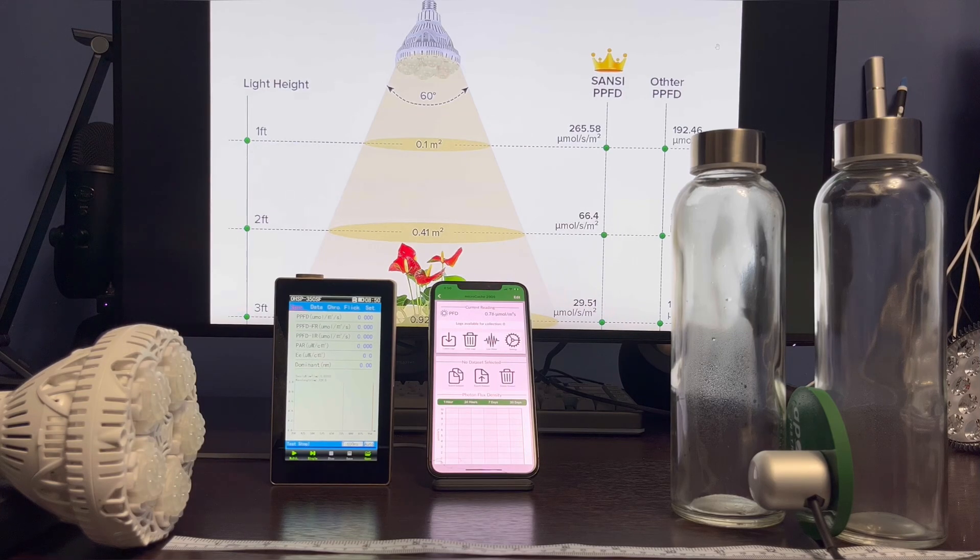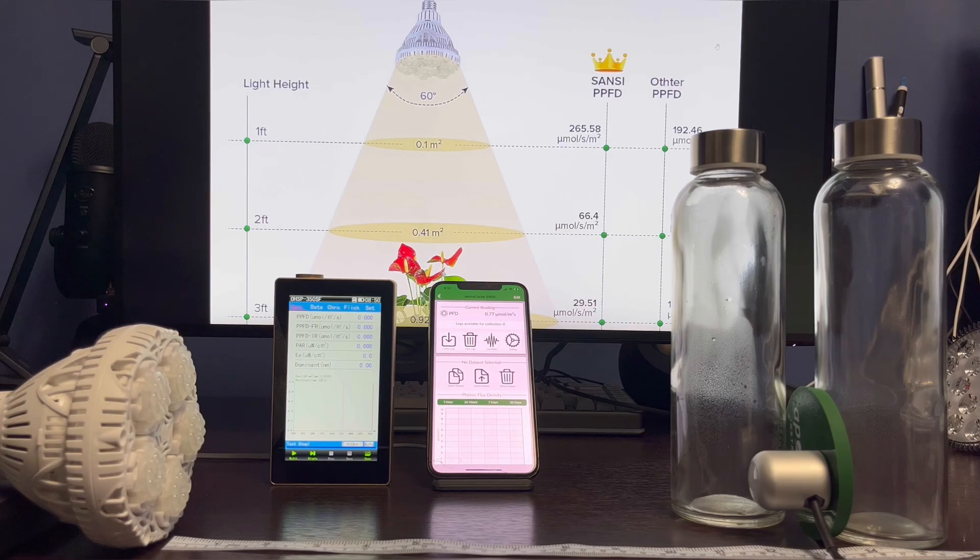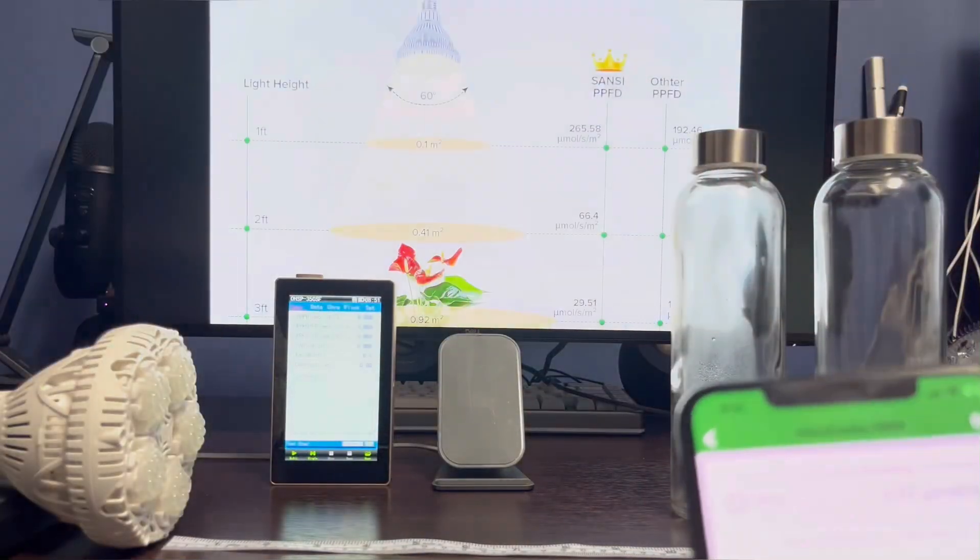Here I have the Sansi grow light bulb at 12 inches distance. It should measure around 265 micromoles per meter squared per second. I'm going to turn on this device and see what it measures, but let me grab the screen first so you can see the live readings.